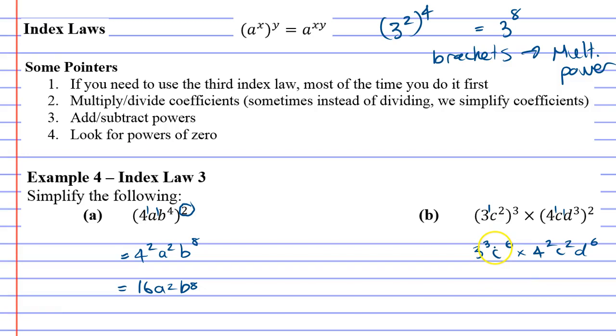Index law 1 states that anything with the same base, you can just add the powers. There's actually only one with the same base, and that's the C: C to the power of 6 and C to the power of 2.